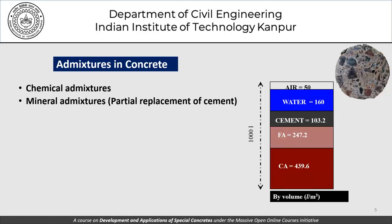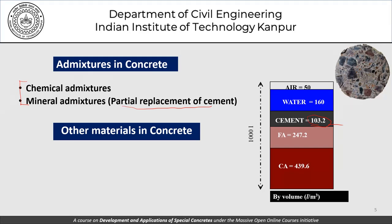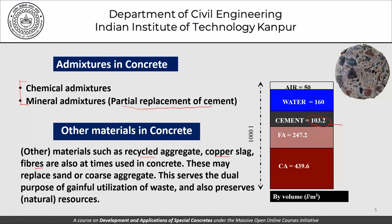There are two kinds of admixtures in concrete: chemical admixtures and mineral admixtures. Mineral admixtures are used in partial replacement of cement, so the 103.2 litres of cement in our mix is what is likely to change. There are instances when we use other material in concrete such as recycled aggregate, copper slag, and fibres, but these are not chemical or mineral admixtures. As far as admixtures are concerned, we will confine ourselves to chemical admixtures and mineral admixtures.